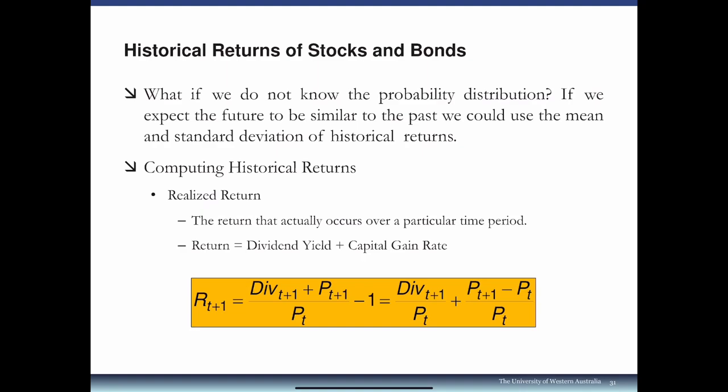Historical return, also known as realized return, is the return that actually occurs over a particular time period. From week 7, we defined return as dividend yield plus capital gain rate: D1/P0 + (P1 - P0)/P0. That's the return coming from two parts, and that's what we call realized return because it's what we actually observe.